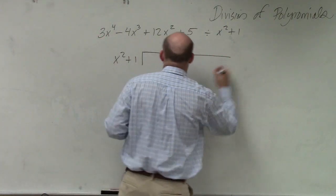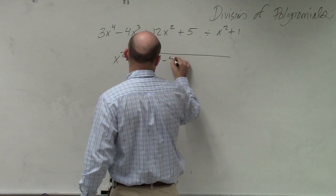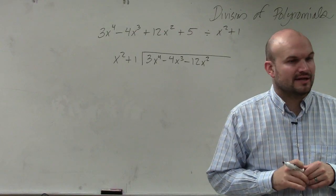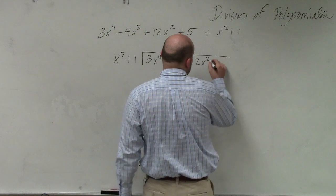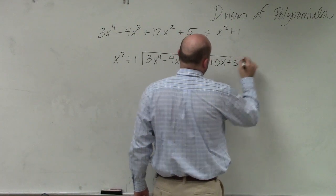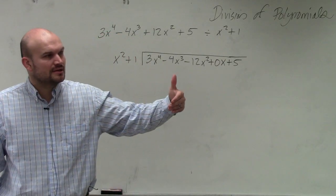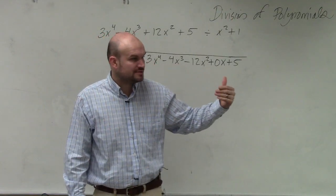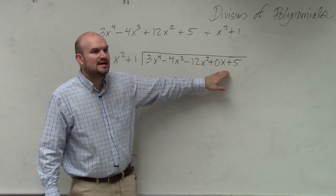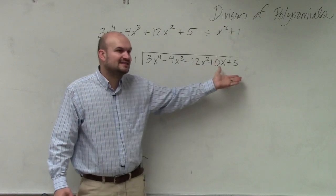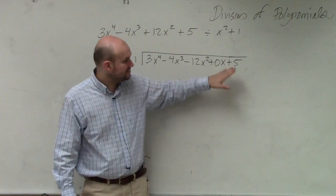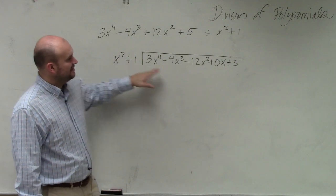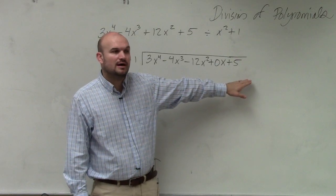x squared plus 1 divides into 3x to the fourth minus 4x cubed minus 12x squared. Is there a linear x term? No. So since there is not a linear x, I am going to substitute in a 0x. If you have any missing terms, I think it would be easier to substitute them with a 0x rather than leaving a gap. Because 0 times x is just 0, so it's not affecting or changing the problem.